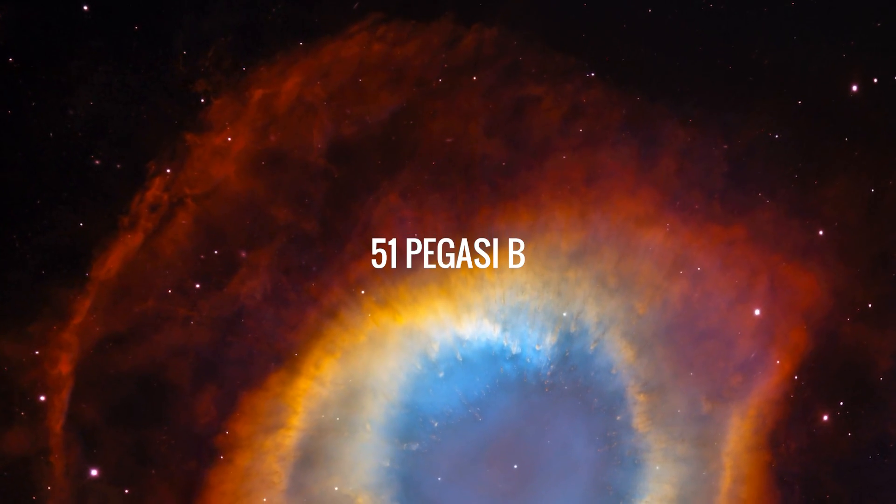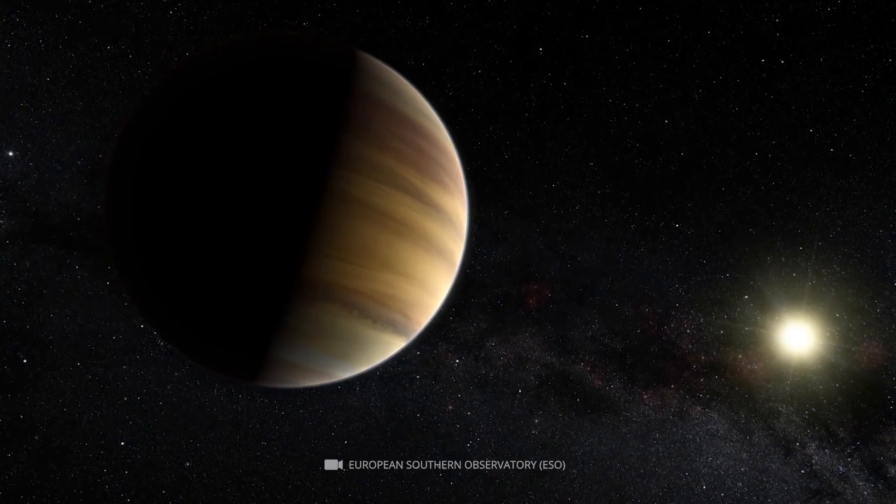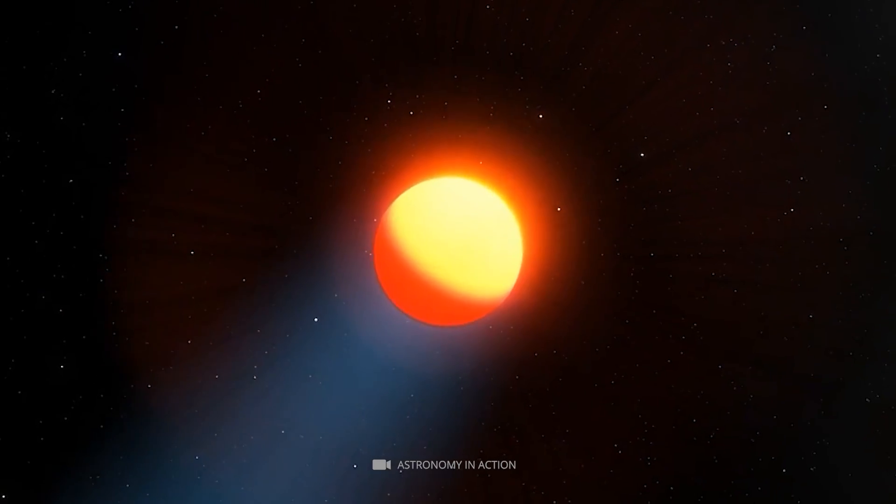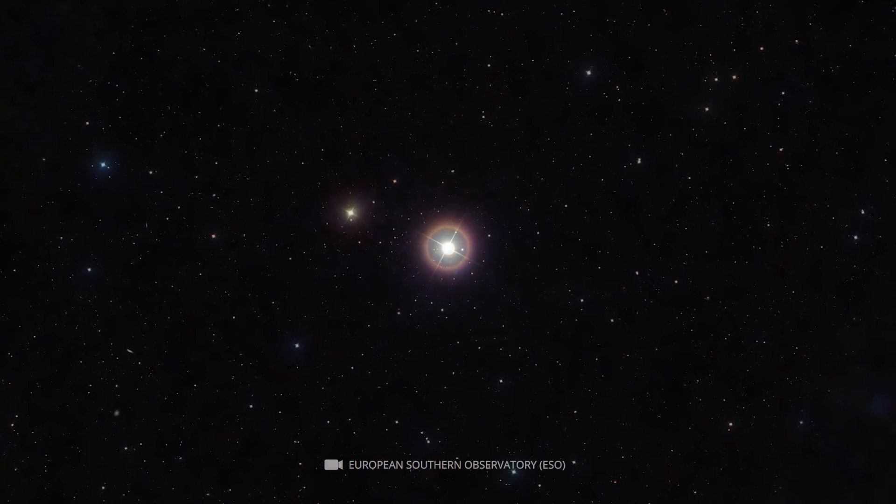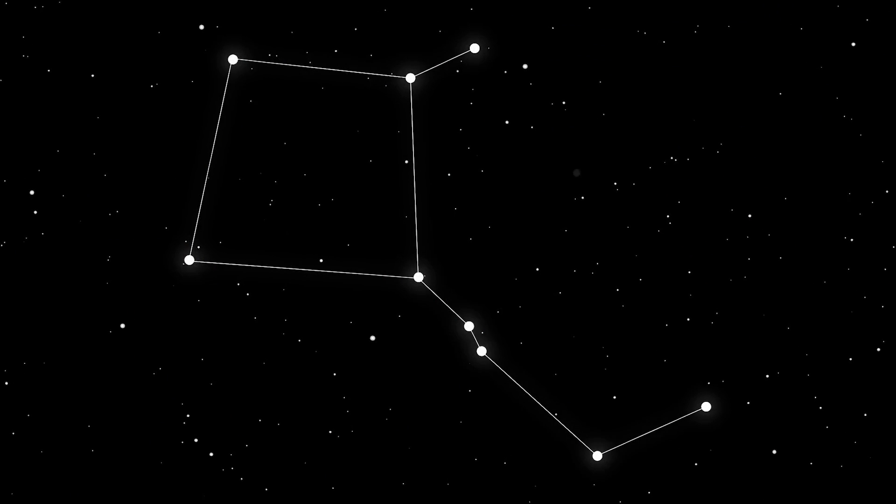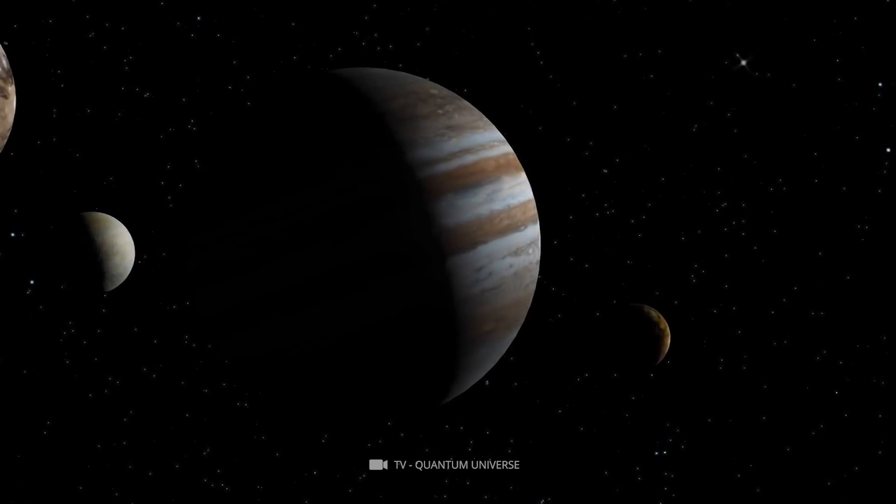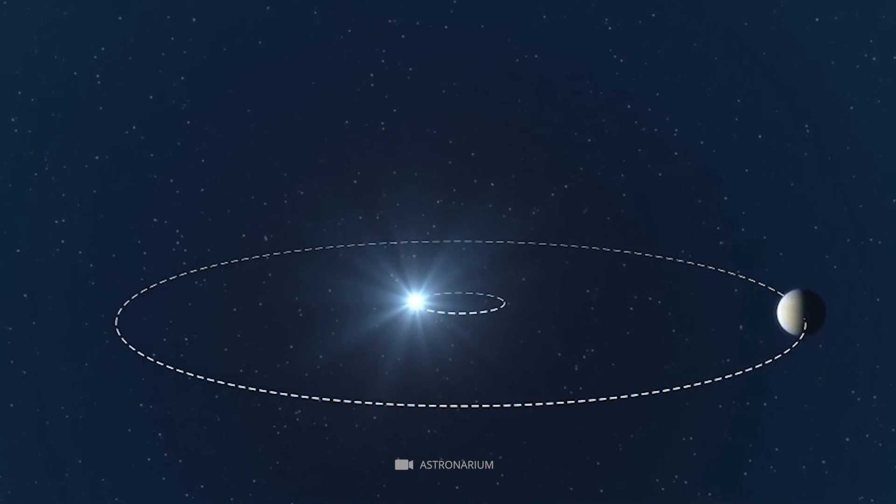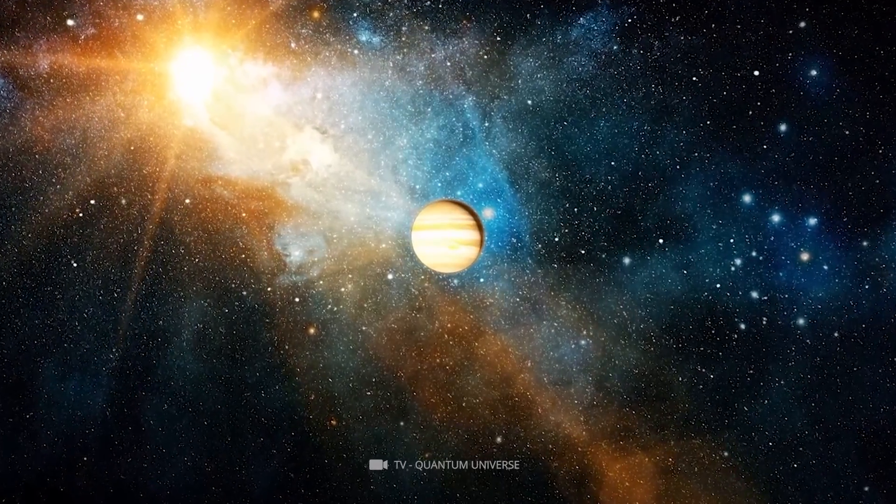51 Pegasi B is one of the most noteworthy and significant exoplanets known to humanity. It was discovered on October 6, 1995, by Michael Mayer, Dieter P. Kalos, and Jeffrey Marcy at the Haut Province Observatory in France, located approximately 50 light-years from Earth in the constellation Pegasus. This planet has a relatively large radius of 135,830 kilometers and an orbital period of 102 hours, making it one of the fastest spinning exoplanets ever discovered.